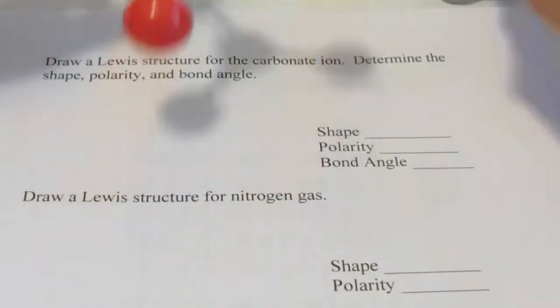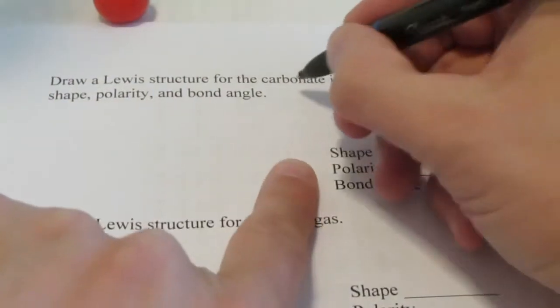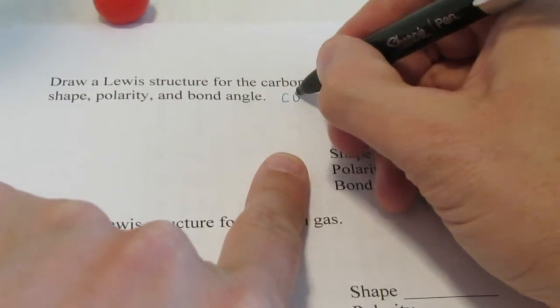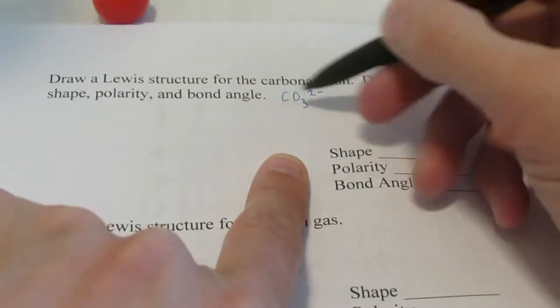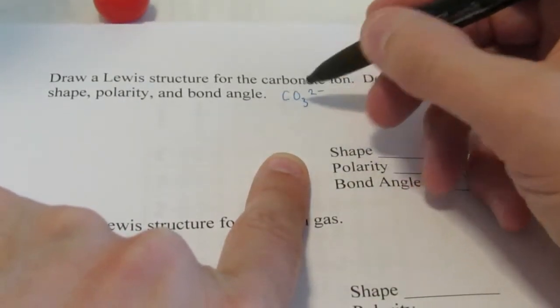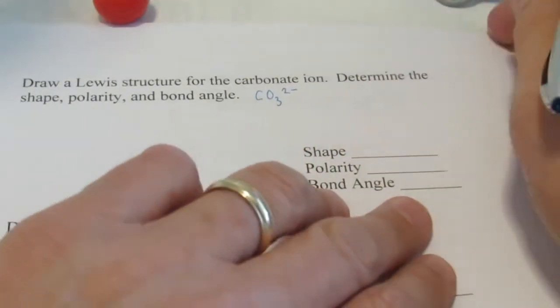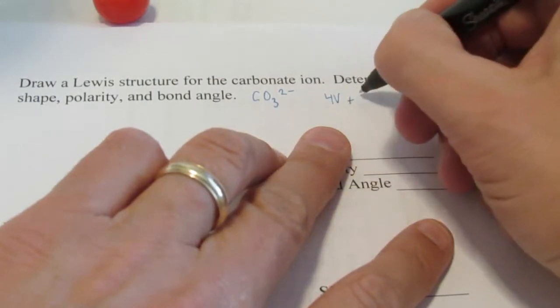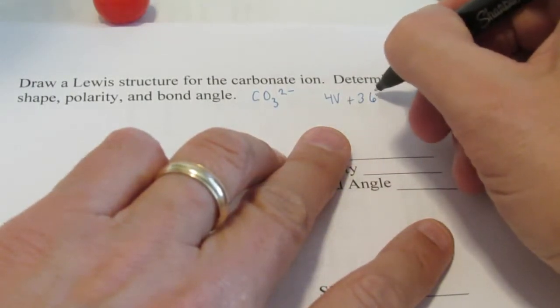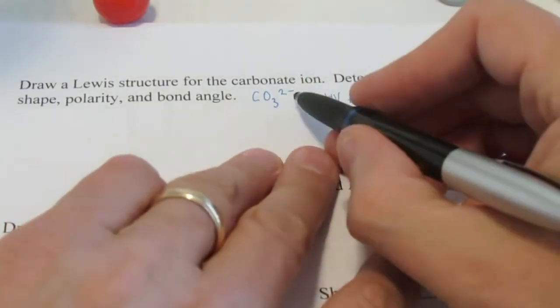We're going to start by drawing the Lewis structure today for the carbonate ion. Now carbonate is CO3 2 negative. So it's a polyatomic ion. That means it's an ion made up of more than one atom. In this case we have a carbon and three oxygens. So let's figure out our valence electrons. Carbon has four. Each oxygen has six valence electrons.